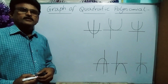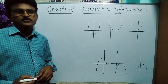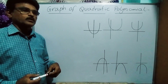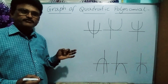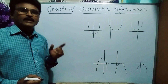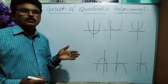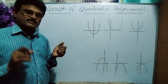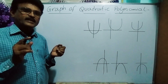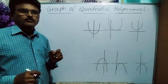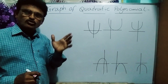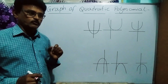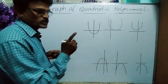Hi friends, this is the 10th video on polynomials. Today our topic is the graph of quadratic polynomials. In the 9th video, I explained the graph of linear polynomials — first degree polynomials. For first degree polynomials, we get straight line graphs. The line cuts the x-axis at only one place, and where it cuts the x-axis is the zero of the polynomial. So for all linear polynomials, we have only one zero.